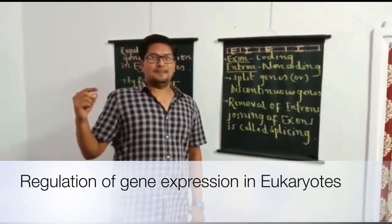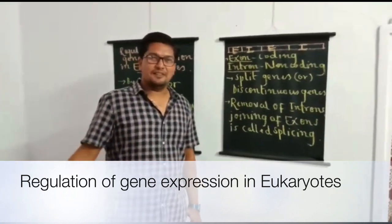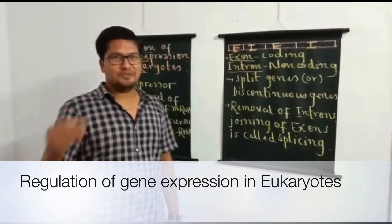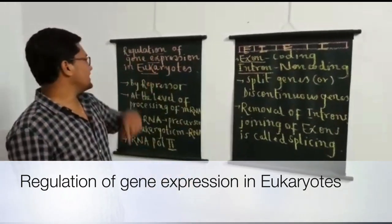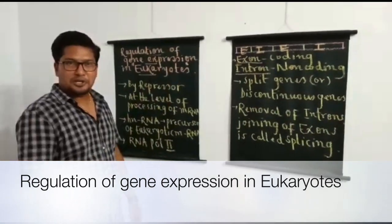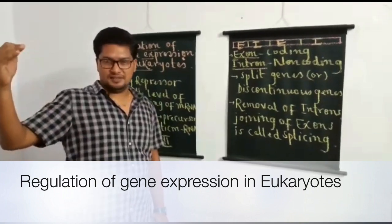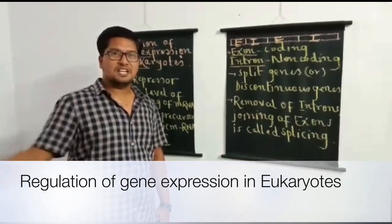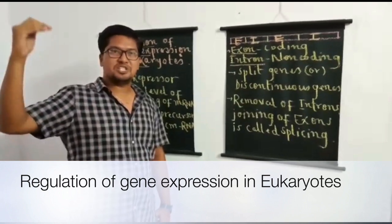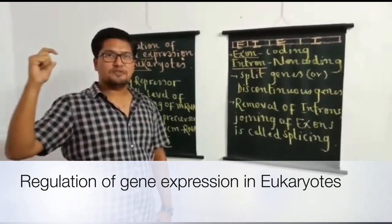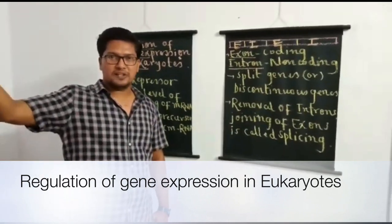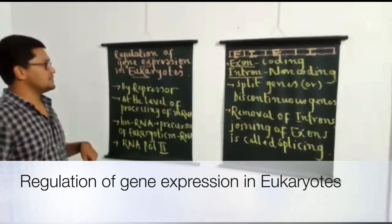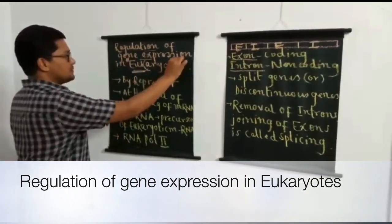Good evening, dear students. In the previous video we studied regulation of gene expression in prokaryotes. In today's video, let me explain regulation of gene expression in eukaryotes. In every organism, DNA contains many genes, but no organism requires expression of all genes all the time. When a gene expression is required, a particular gene is switched on, and when not required, it is switched off. This mechanism is called regulation of gene expression.